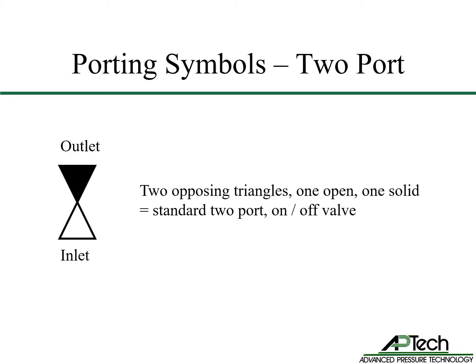A two-ported valve symbol consists of two opposing triangles. One triangle is open — this is the inlet port, and the port enters the valve below the seat. The other triangle is solid — this port is downstream of the seat. This is a standard two-port on-off valve symbol.